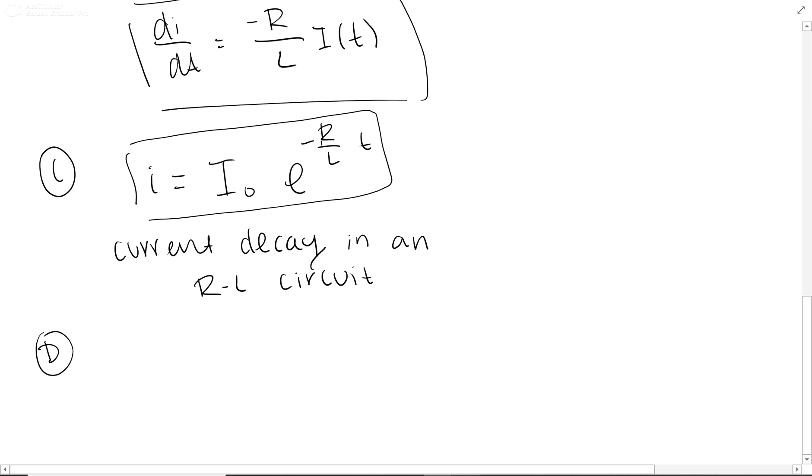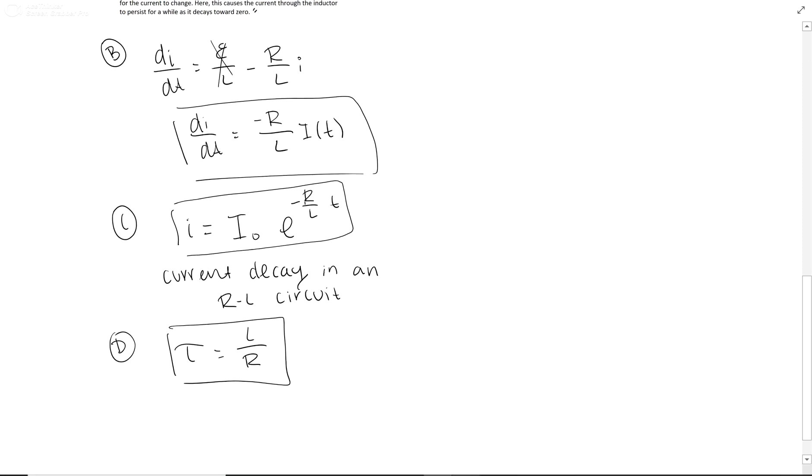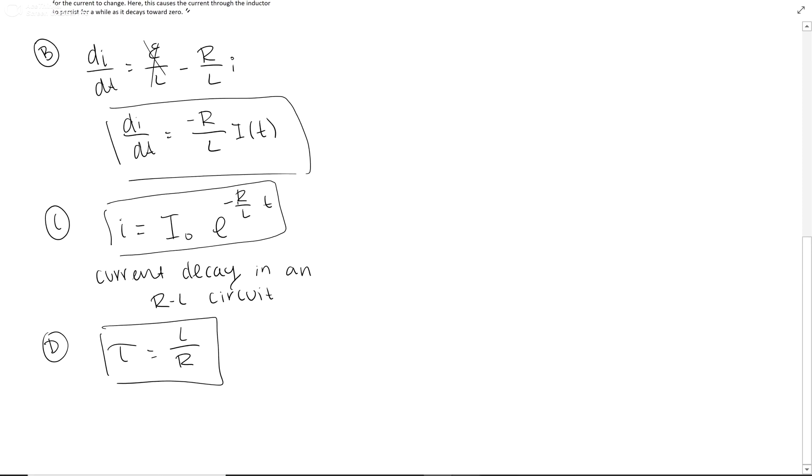And then D is asking what the time constant is, and this is another equation straight from the textbook. That's your whole thing. This whole question is mostly just textbook things you just have to read it.